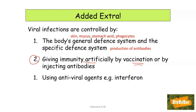Thirdly, virus infections can be controlled by antiviral agents — for example, interferon. So even though we are using medication and artificially developed chemicals to control the infection, antibodies must still be produced by your own body.